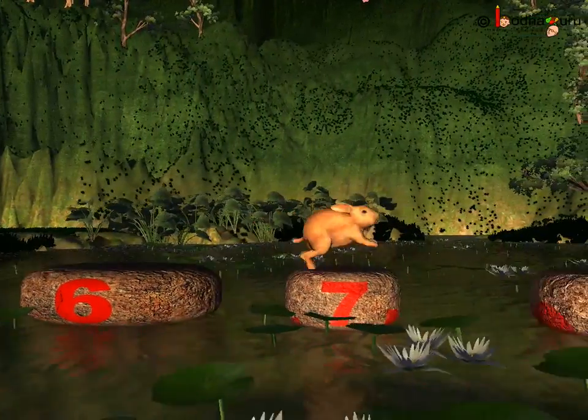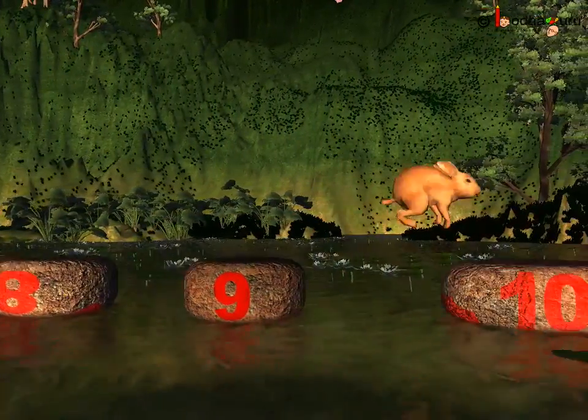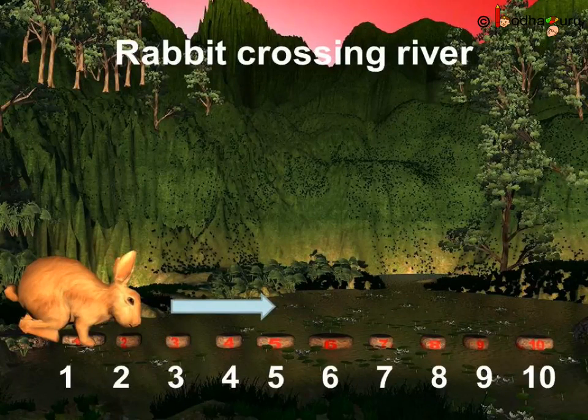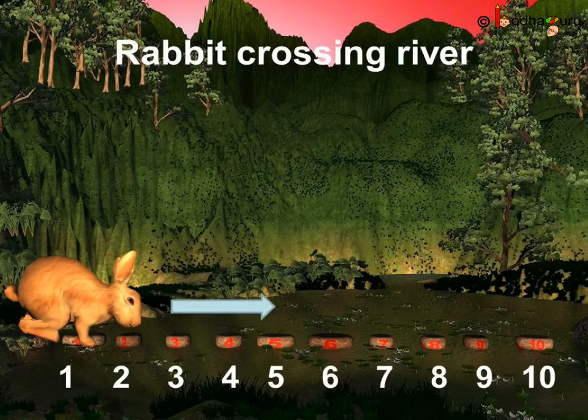Even 1, 2, 3, 4, 5, 6, 7, 8, 9, and 10 to reach the fun zone. So, the rabbit also used the forward counting.